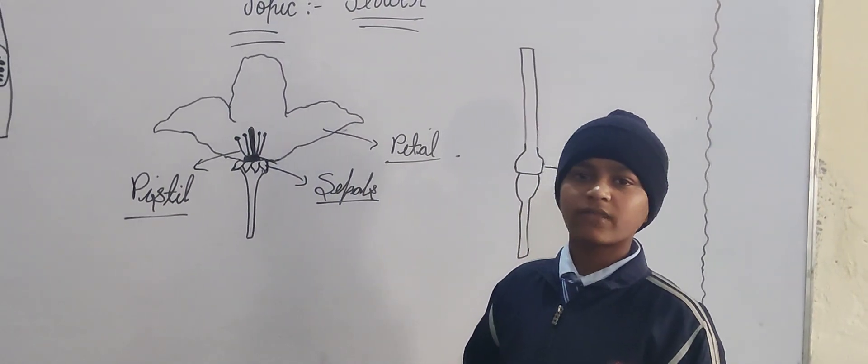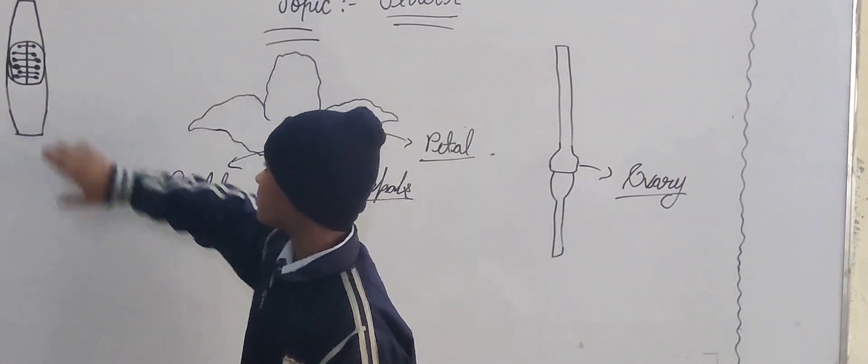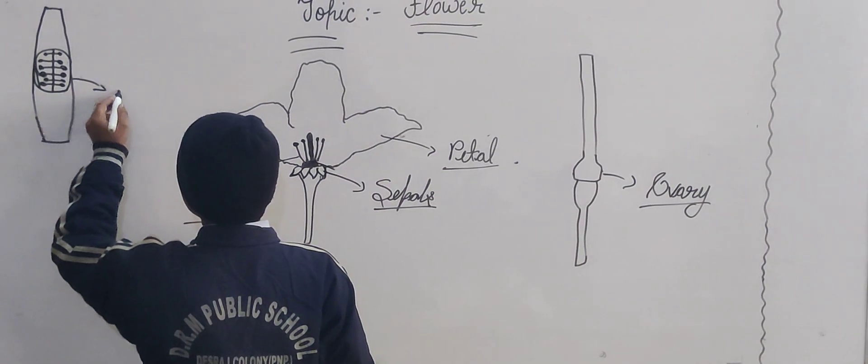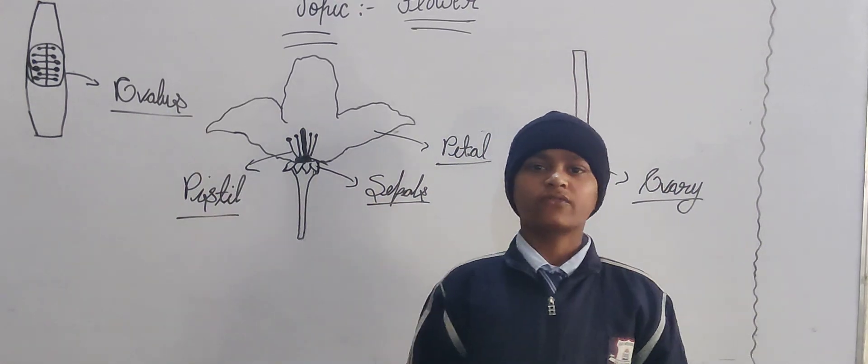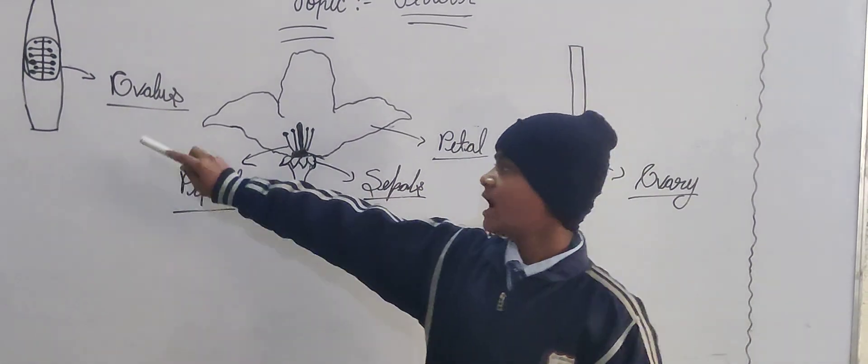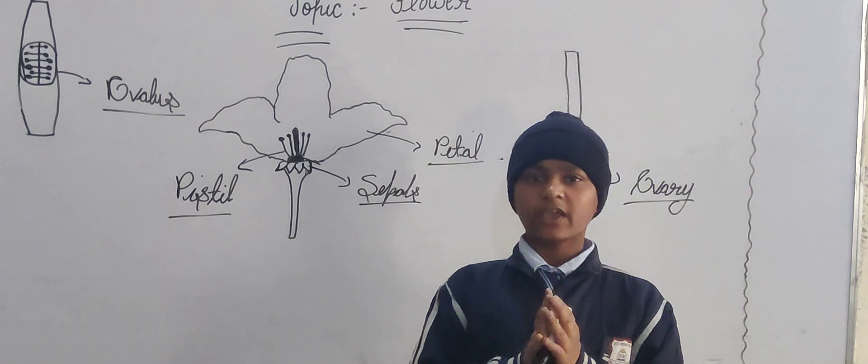Next part of the flower are the ovules. The small bead-like structures inside the ovary are called ovules. Thank you for a great day.